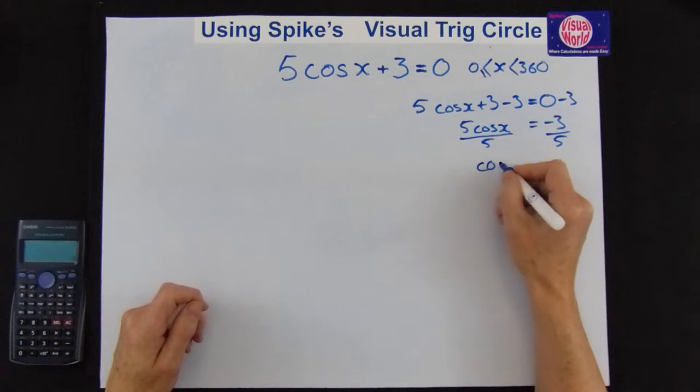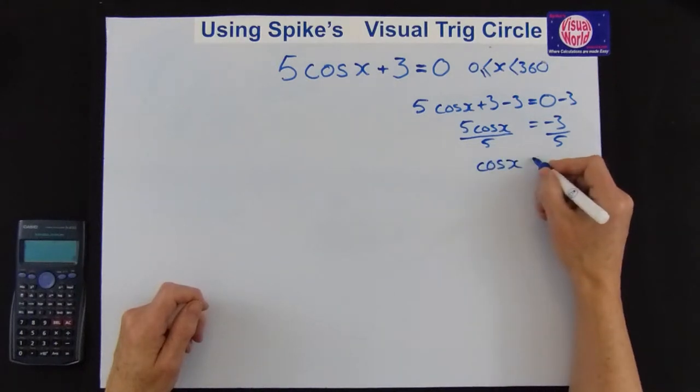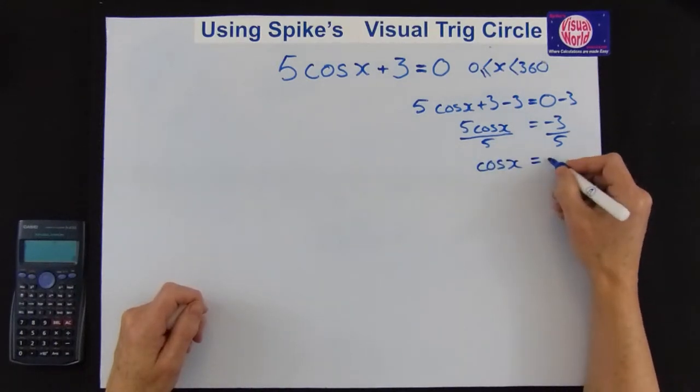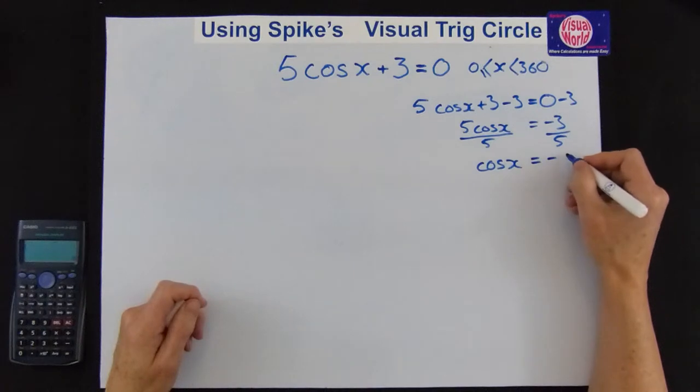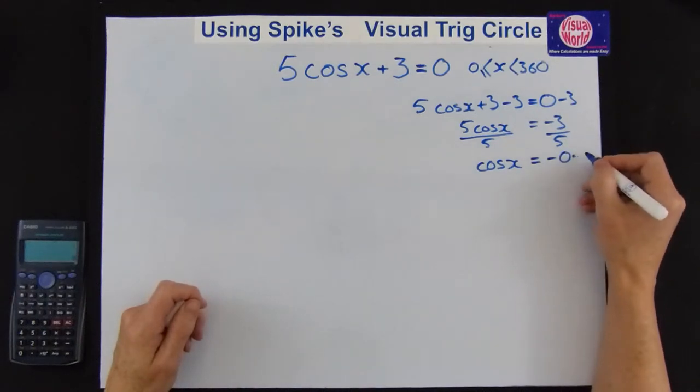So we divide the other side by the 5. And we're left with cos x equals minus, if we do that, you can do that on the calculator or if you know what you're doing. So it's minus 0.6.